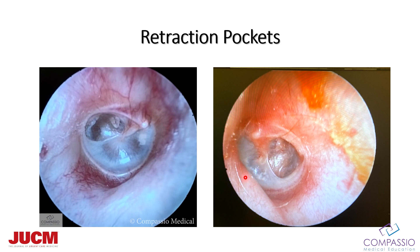Retraction pockets are most commonly going to be up at the pars flaccida or in the posterior superior aspect of the tympanic membrane. This is a right ear — it's really thin because there's eustachian tube dysfunction pulling in that portion of the tympanic membrane. Here's a left ear, same thing. It's very thin and might even look like a perforation, but it's not — it's a retraction pocket.